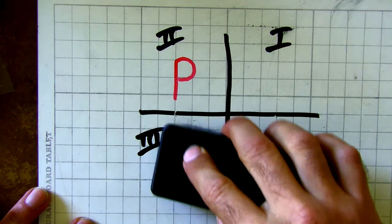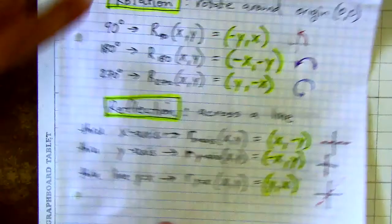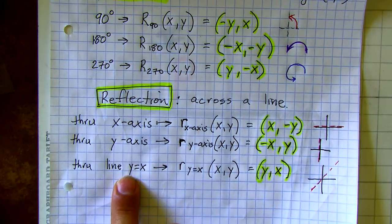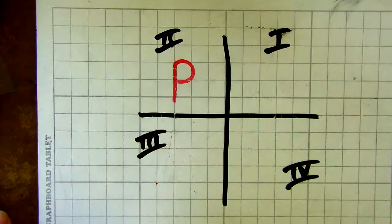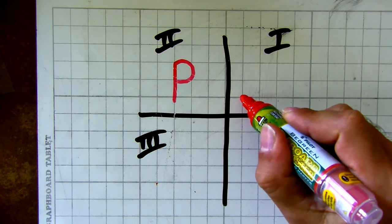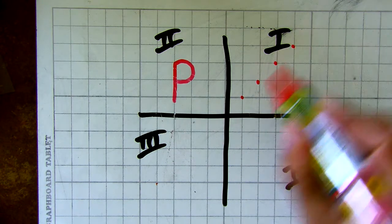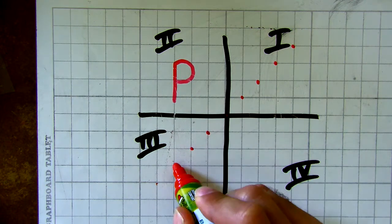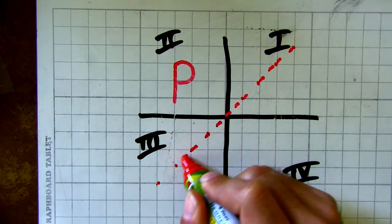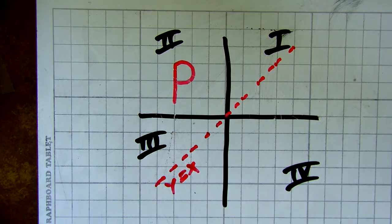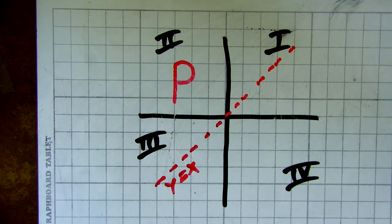The last one is the hard one. One of the reflections we had to do was across the line y equals x. Think about what y equals x is saying: when x is 1, y is 1; when x is 2, y is 2; x is 3, y is 3, and so on — including negatives. So this is my y equals x line. This one is kind of tricky — you might figure out which quadrant it goes in, but can you visualize it? This is spatial reasoning.